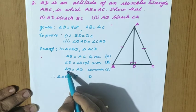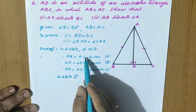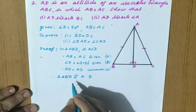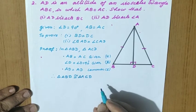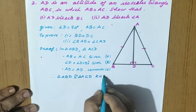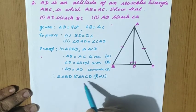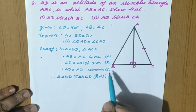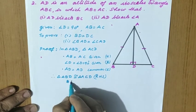For the correspondence: A is common, D corresponds to D, and B corresponds to C. So triangle ABD is congruent to triangle ACD by RHS criteria. The proof is not yet complete — now by CPCT, BD equal to CD.